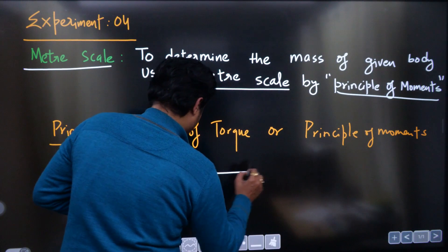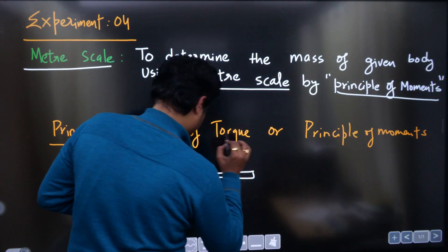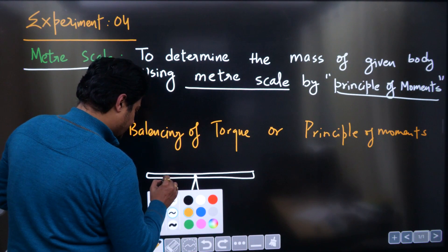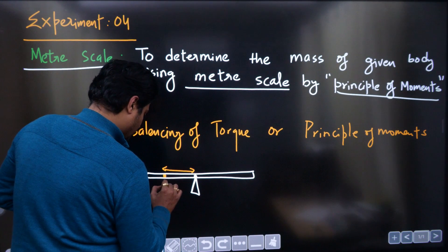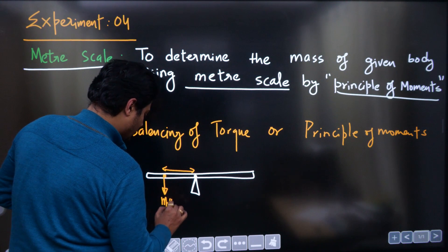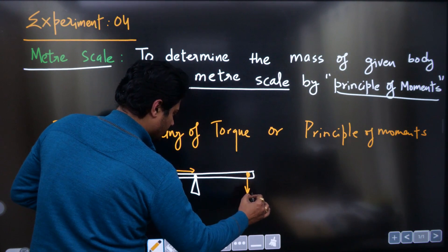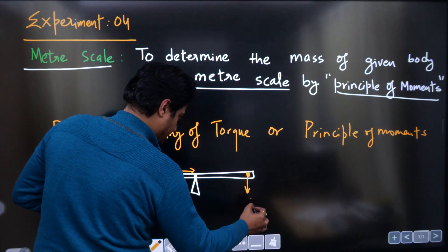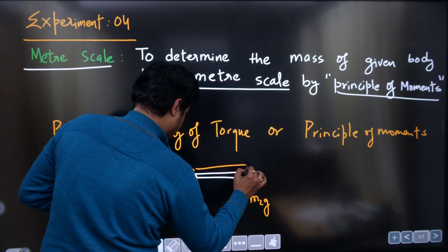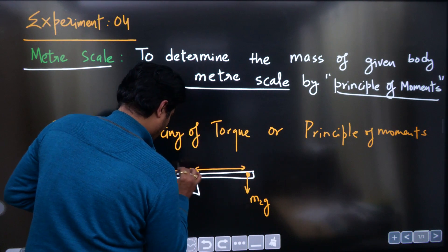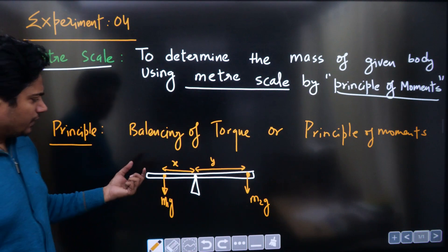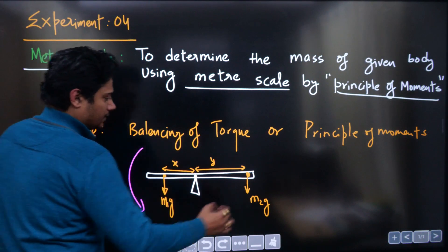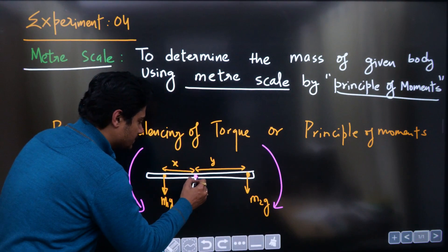Suppose there is a rod balanced at some point — this is the balancing point. If you attach two weights at distances: one weight M1G is attached here and another weight M2G is attached somewhere on the other side. The distance from the balancing point to M1G is X and to M2G is Y.